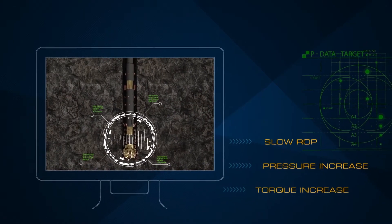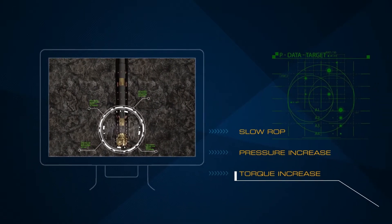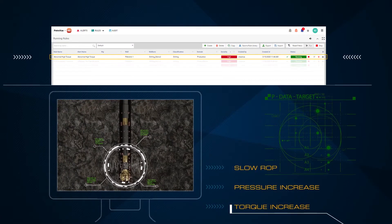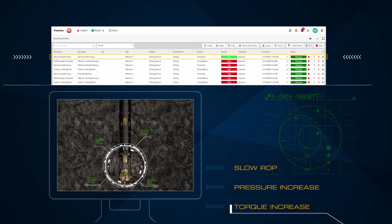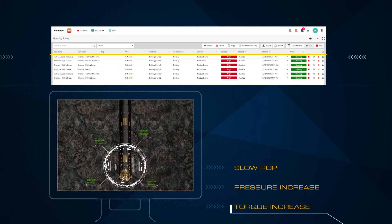Let's say there are signs of an unplanned event, such as stuck pipe. MBE quickly notifies the engineer that these warning signs are present, so they can take action and resolve the problem before it occurs.